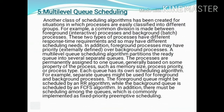Today we are discussing the fifth scheduling algorithm, which is multi-level queue scheduling. A common division is made between foreground processes, known as interactive processes, and background processes, known as batch processes. In multi-level queue scheduling, the ready queue is divided into several separate queues and processes are permanently assigned to one queue, generally based on properties such as memory size, process priority, and process type.